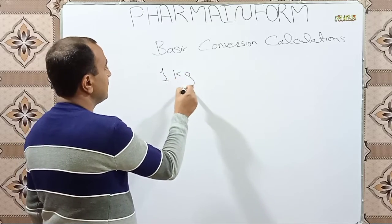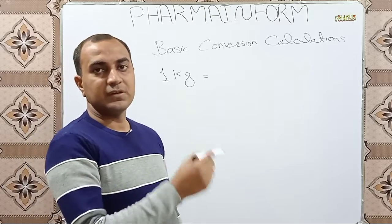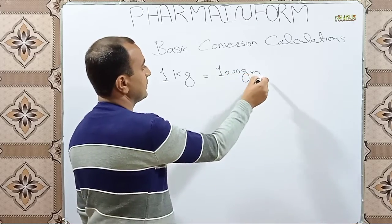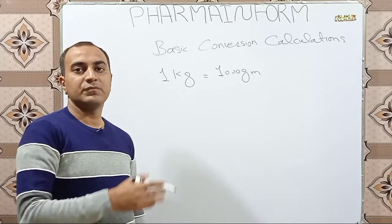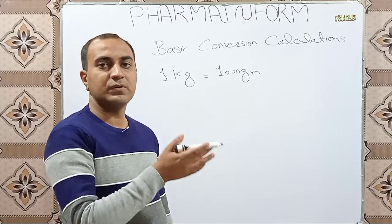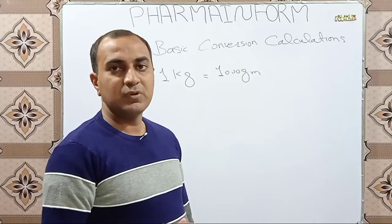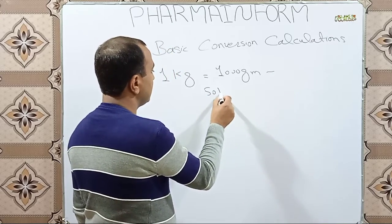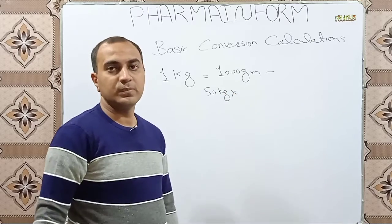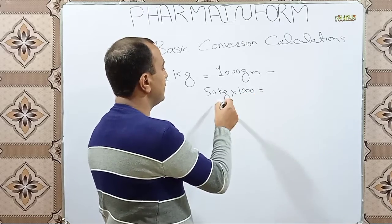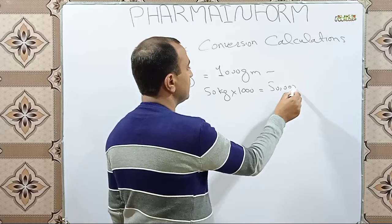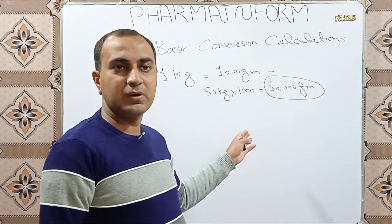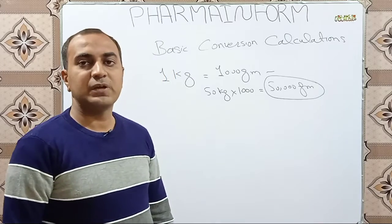First we will learn how to convert kilograms into grams. One kilogram is equal to one thousand grams. If you want to convert any quantity given in kilograms into grams, simply multiply it by one thousand. For example, if you want to convert 50 kilograms into grams, multiply by 1000 and you will get the answer: 50,000 grams.